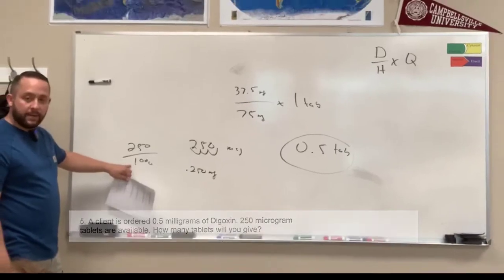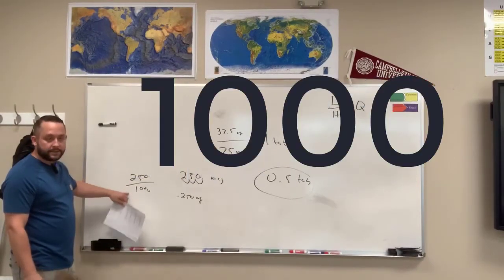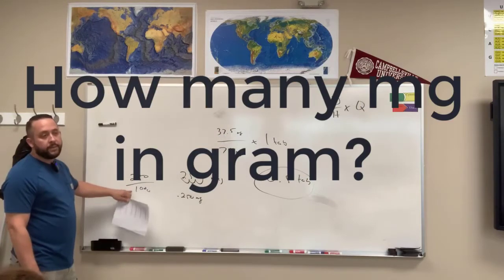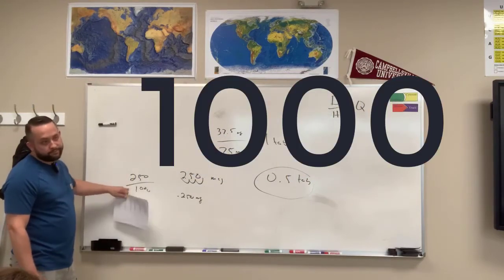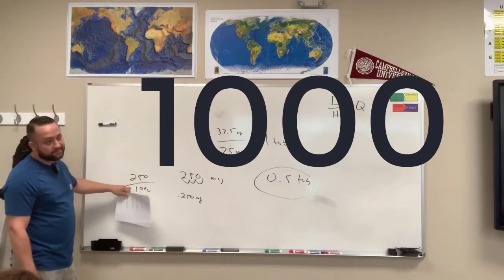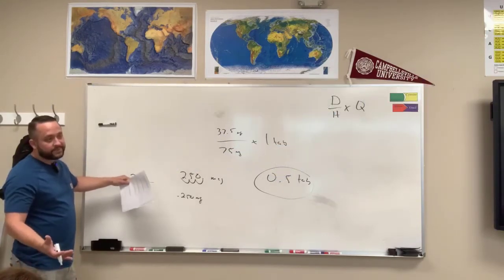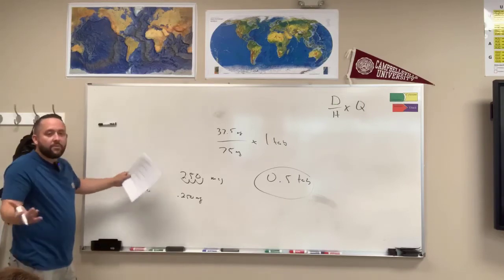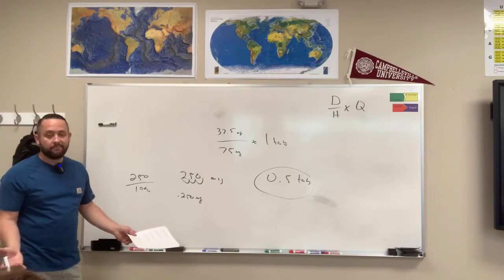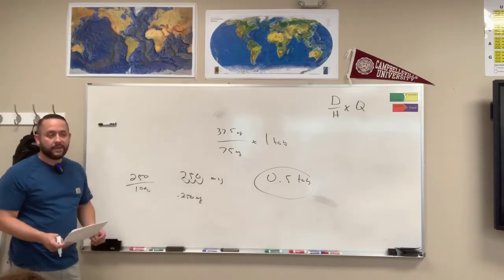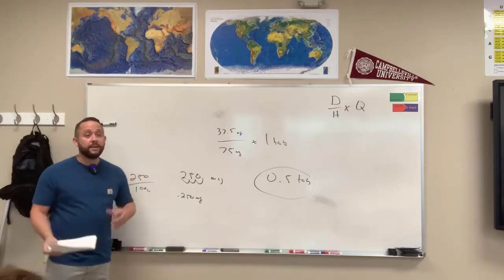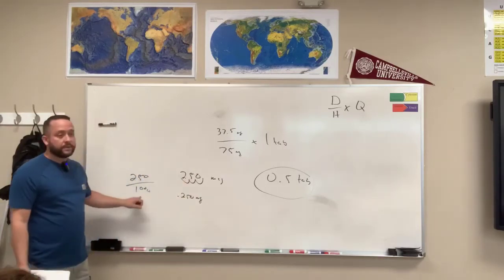It's usually a thousand because how many milliliters are in a liter? A thousand. How many micrograms are in a milligram? A thousand. How many milligrams are in a gram? A thousand. How many grams are in a kilogram? A thousand. Very rarely will you ever be using anything other than a thousand here. You might have to do this three or four times.